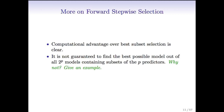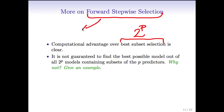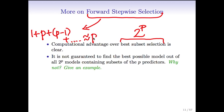Forward stepwise selection has a clear computational advantage over best subset selection. In best subset selection, we consider 2 to the P models — like a trillion when P equals 40. In contrast, in forward stepwise selection: for M0 we consider just one model; to get M1 we consider P models; for M2 we consider P minus 1 additional predictors; and so on. In total, we're considering around P squared models. Since P squared is much less than 2 to the P, we're considering far fewer models with forward stepwise.